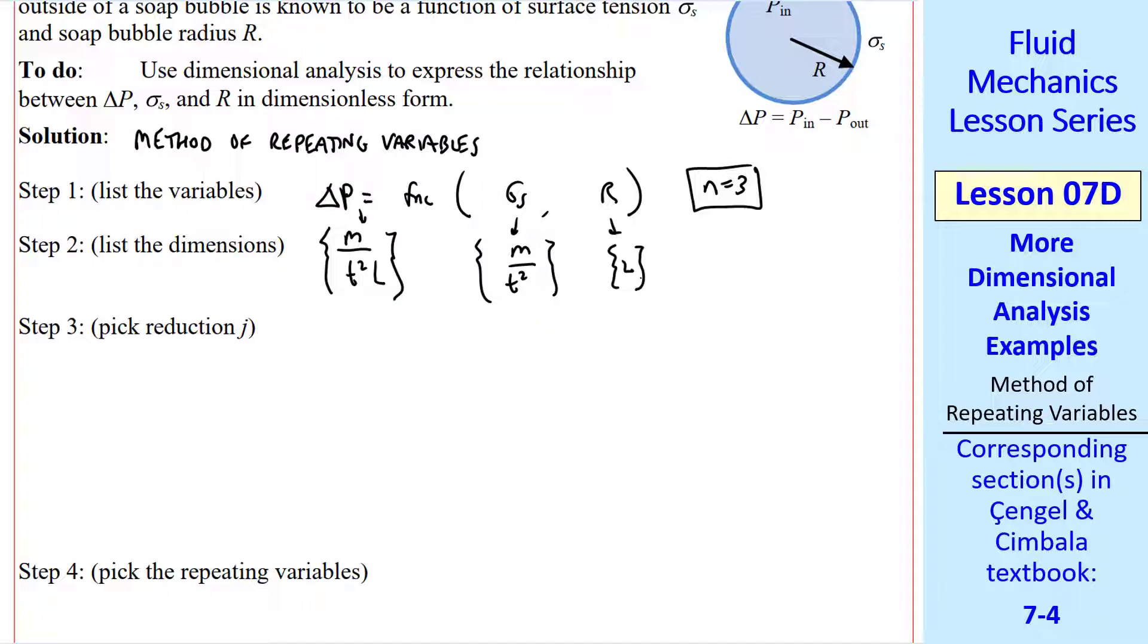Step 3 is to pick the reduction j. There are 3 primary dimensions in this problem, m, l, and t. So we pick j equal 3. The Buckingham Pi theorem tells us that k equal n minus j equal 3 minus 3 equals 0. So we expect 0 pi's. Well, that doesn't make any sense. So what does it mean?